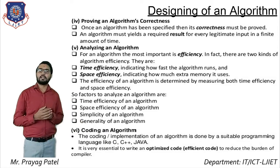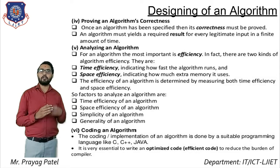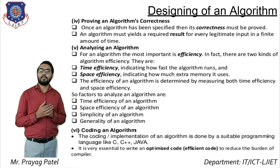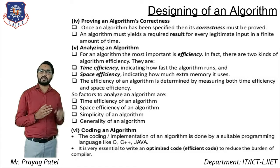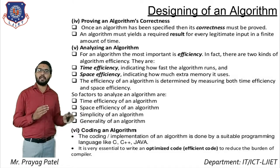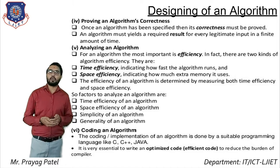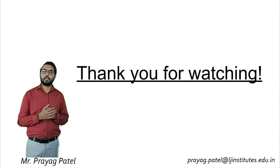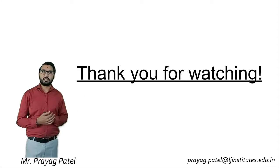The last step is coding the algorithm — after designing, you implement the algorithm using a suitable programming language like C, C++, or Java, using good optimization code writing techniques. In this lecture we discussed what is an algorithm, how to write an algorithm, and properties of an algorithm. In the next video lecture we will discuss the remaining topics of this chapter. Thank you for watching.